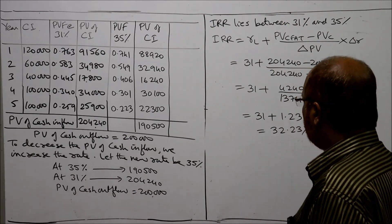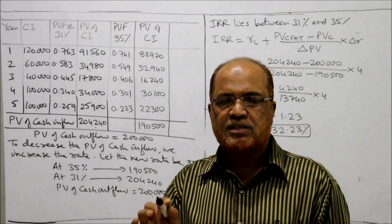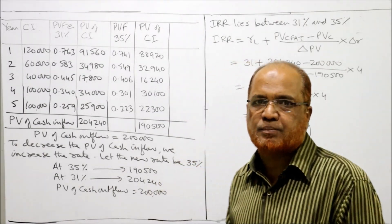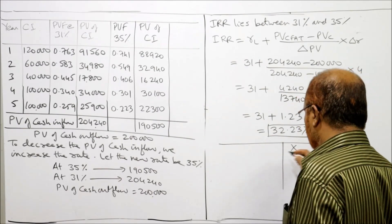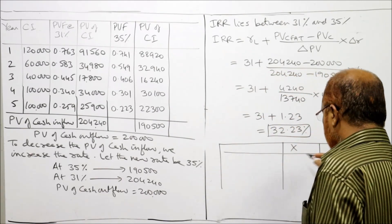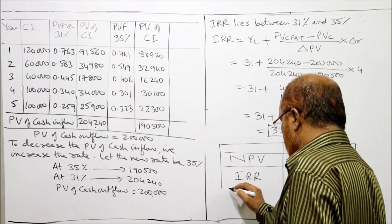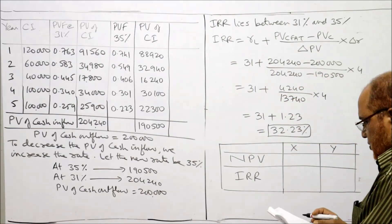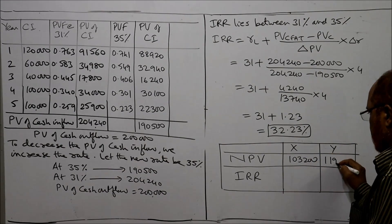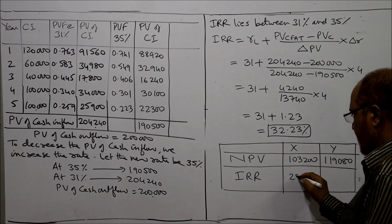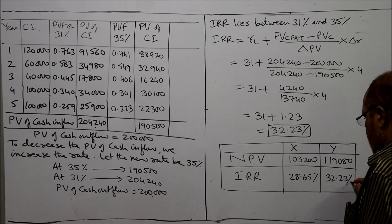The result is 31 plus 1.23, which equals 32.23%. That is the IRR of Project Y. Now we compare NPV and IRR for both projects. For Project X: NPV is one lakh three thousand two hundred, and IRR is 28.65%. For Project Y: NPV is one lakh nineteen thousand eighty, and IRR is 32.23%.